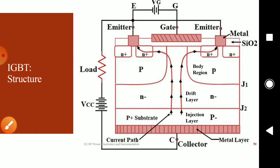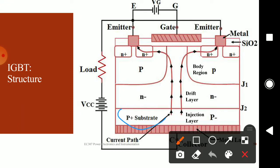Moving on to the structure of the IGBT. You can see the P-plus substrate region, which is also called the injection layer. The reason is that the P-plus region injects holes into the N-minus layer. The N-minus layer is called the drift region, and the thickness of the N-minus layer determines the voltage blocking capability of the IGBT, similar to the power diode, the power BJT, and the power MOSFET. The N-minus layer is responsible for the value of the voltage blocking capability.